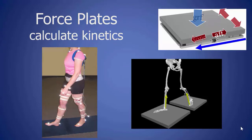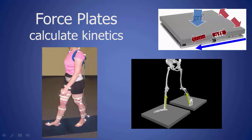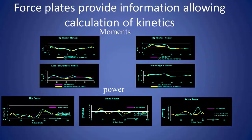Embedded in the floor are force plates, which calculate kinetics. These are basically like a standard bathroom scale with sensors. The first sensor is the ground reaction force — the up and down motion — similar to a bathroom scale. Additionally, sensors placed sideways record the fore and aft shear as well as the side-to-side shear. This is used to calculate kinetics, which can be very useful in certain situations.